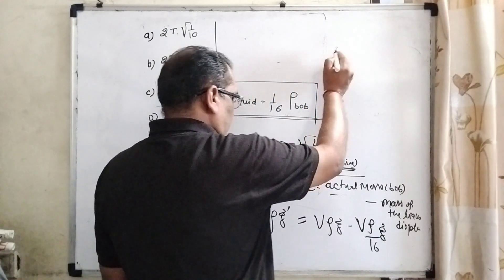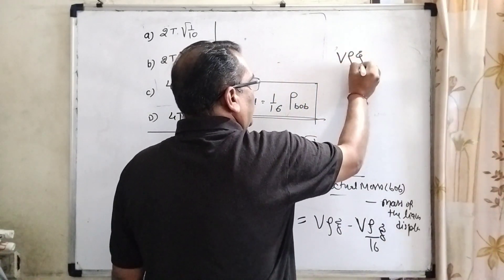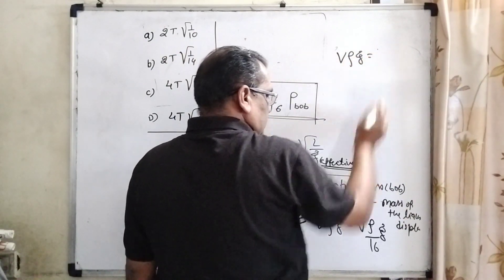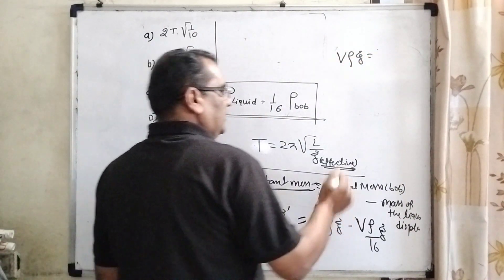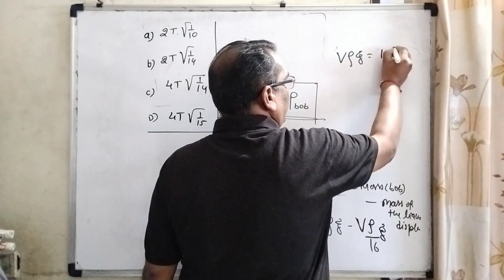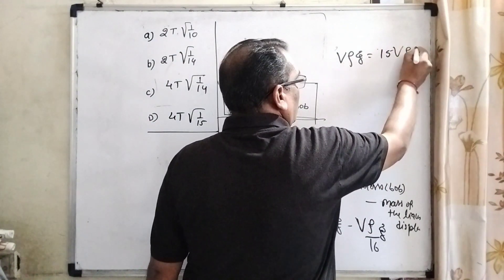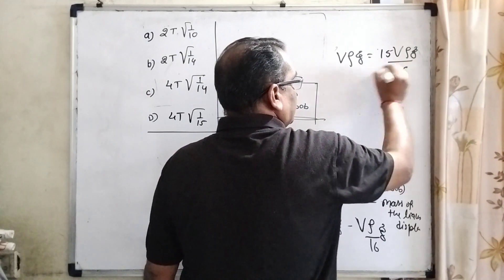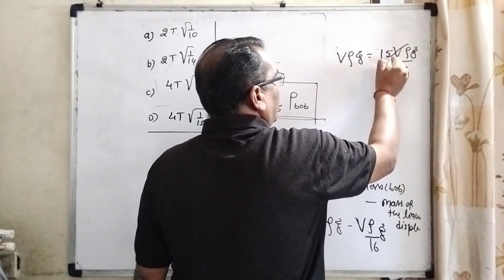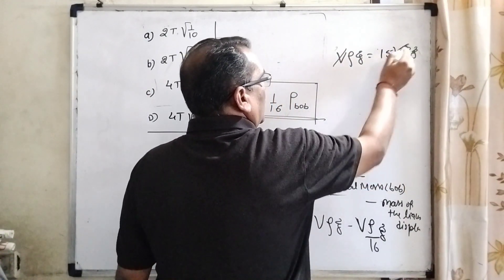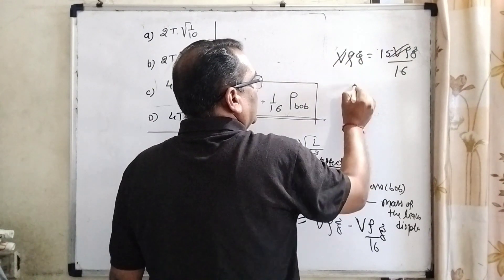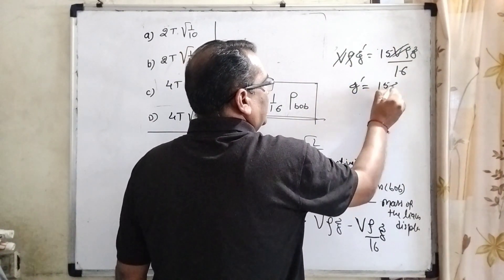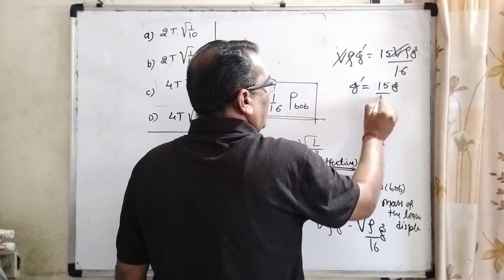So here V·ρ·G − (V·ρ/16)·G = (16−1)/16 × V·ρ·G = 15V·ρ·G / 16. V and ρ cancel out, giving us G_effective = 15G/16.